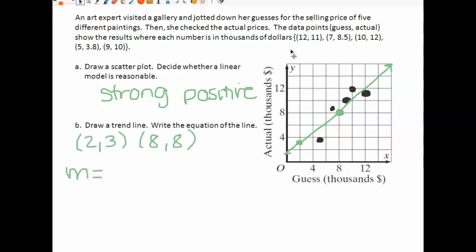And then my slope is 8 minus 3 over 8 minus 2, which is 5, 6. So, what that means is that my guess and my actual were pretty close. But, that if I guessed the actual to be, if the actual is 5,000, my guess was 6,000. So, I kind of guessed the art to be a little higher than what it was. The y-intercept appears to be right here at 1. So, my equation would be y equals 5/6x plus 1.